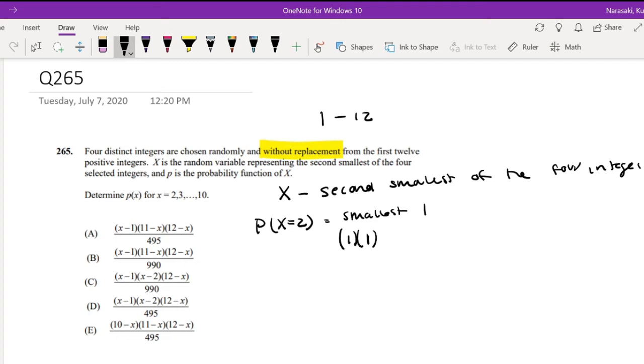But if I already pick 2 cards, then how many cards do I have left? I have 10 cards left. And out of 10 cards, I'm picking 2. So 10 choose 2. And what's the whole probability? Well, I have 12 cards in total, and I'm picking 4.